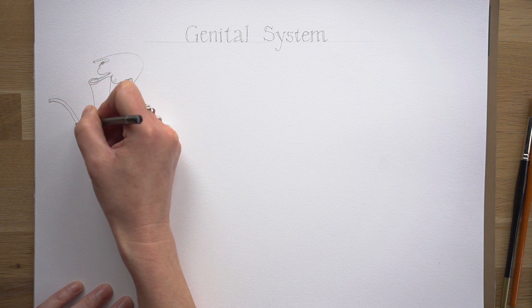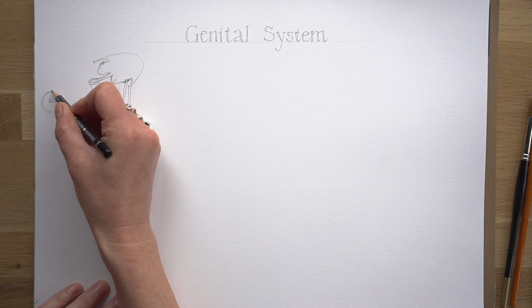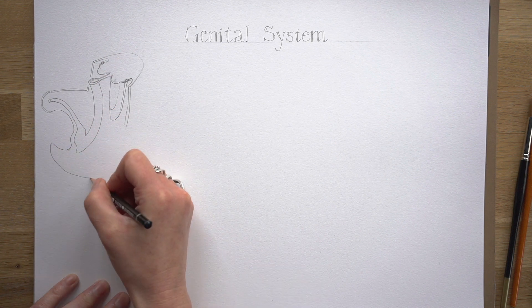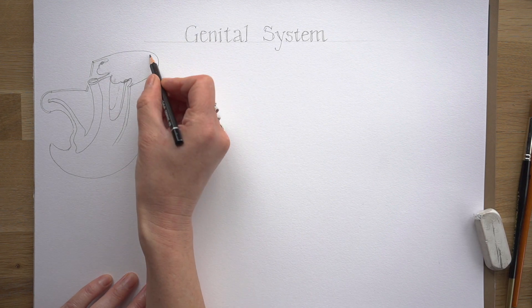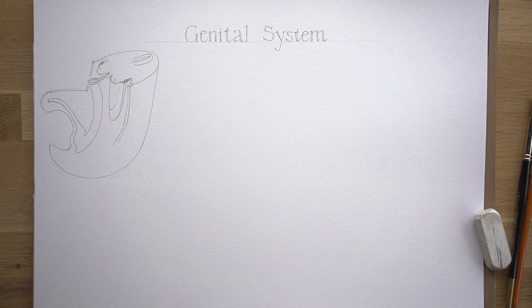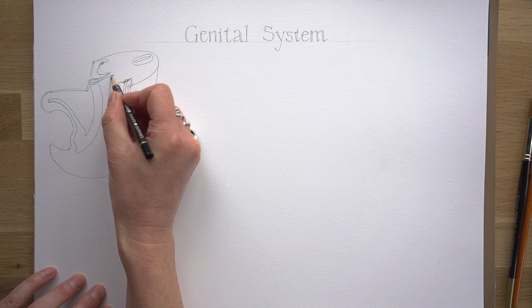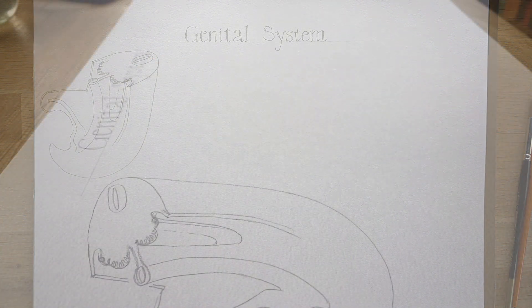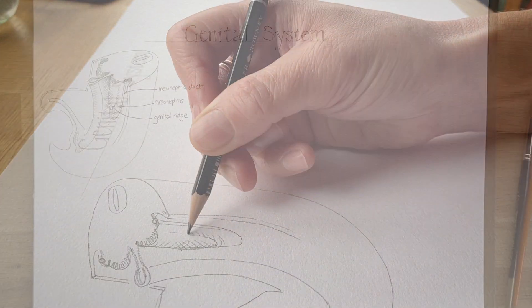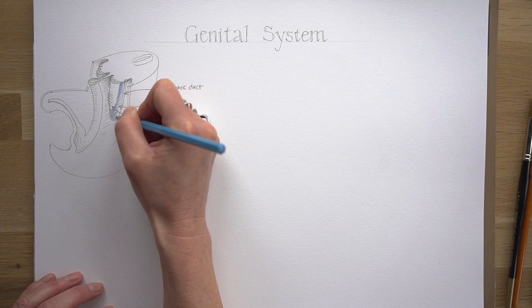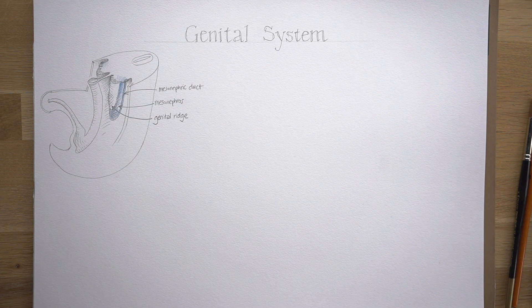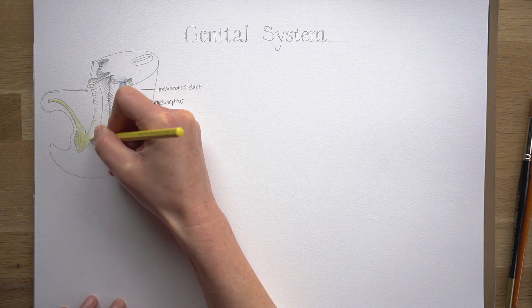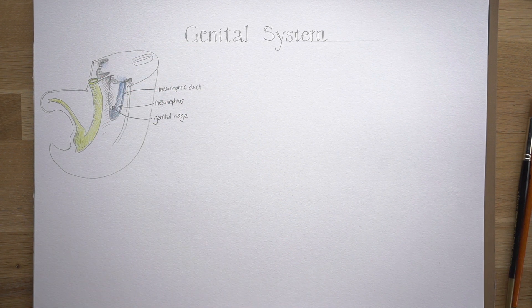Both sexes start off with a unisex kit of parts. That kit includes the mesonephros, which exists as a paired structure on the posterior abdominal wall, and just tucked in medially to the mesonephros is a genital ridge — so we have paired genital ridges. The epithelium of the genital ridge grows inwards, penetrating the mesoderm inside to form structures known as sex cords — cord-like projections of tissue into that developing genital ridge, which is destined to become the gonad. Early on, the genital ridges are empty of any germ cells.